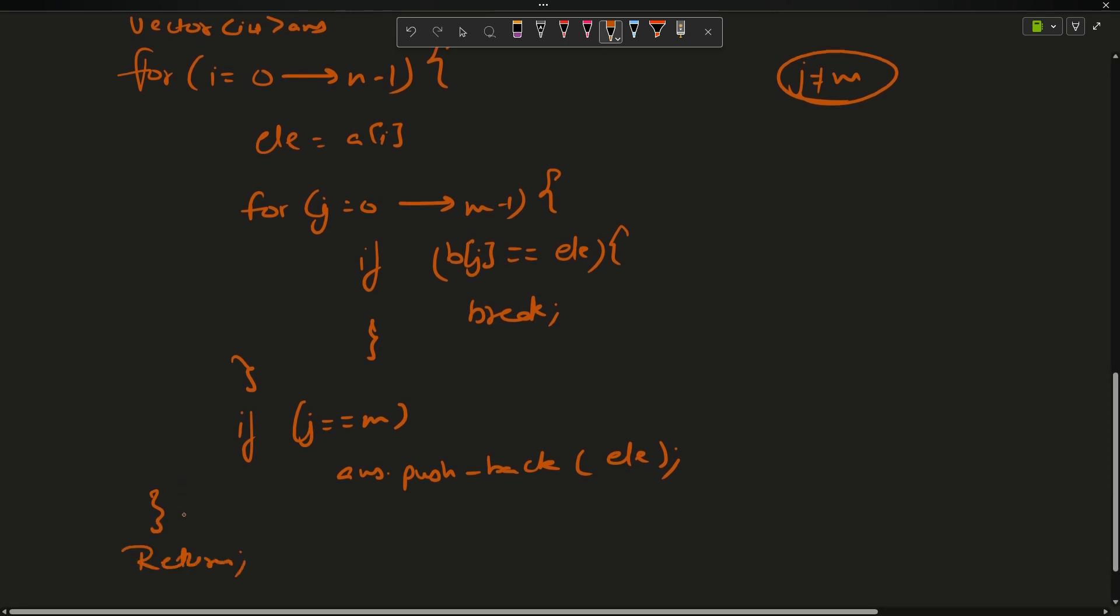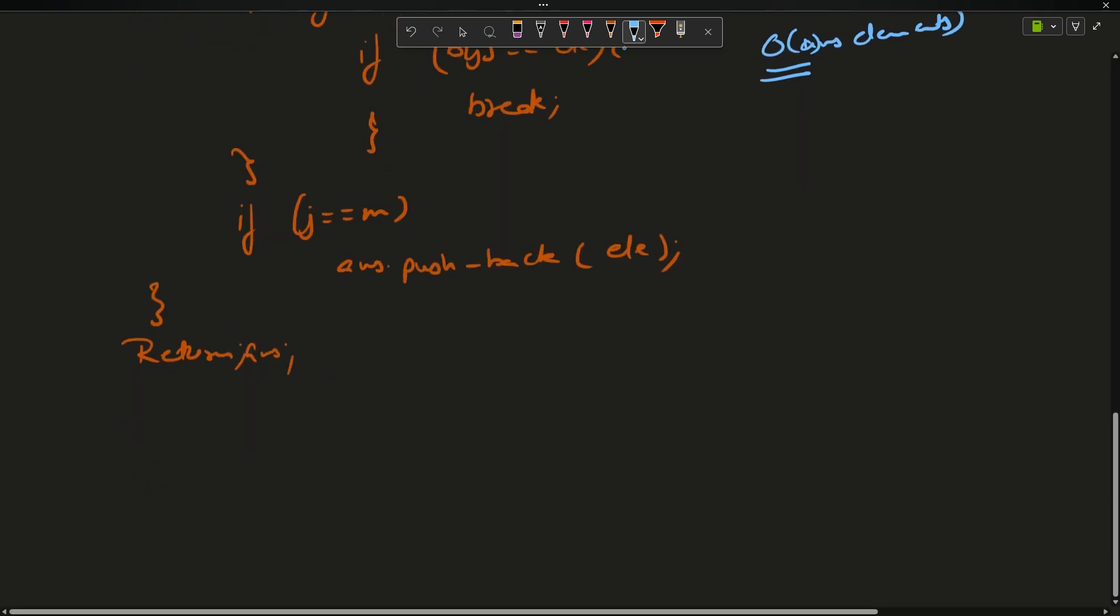What is the time complexity here? Again, nested loops O(n²). This should be well versed with you. Space complexity O(1), well not O(1), we are keeping the answer, so you can say O(answer elements), whatever is required. Now let us move to the optimized approach.